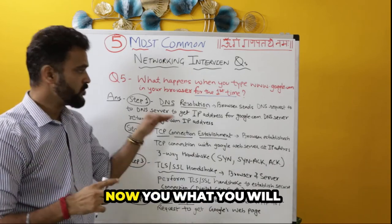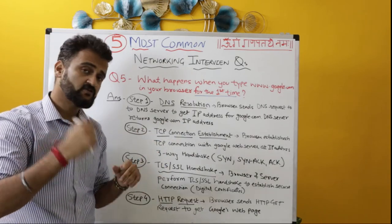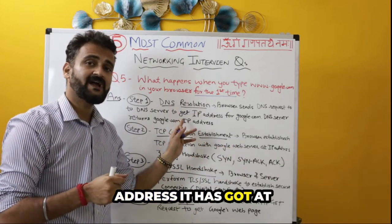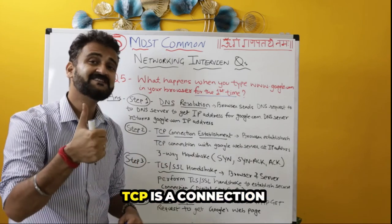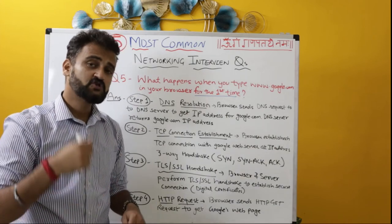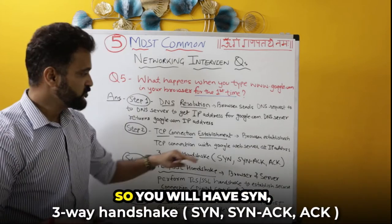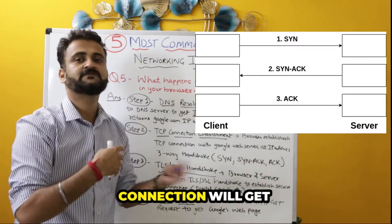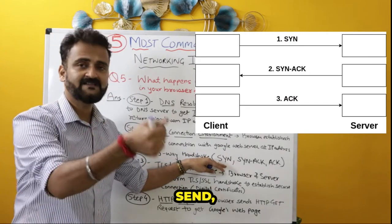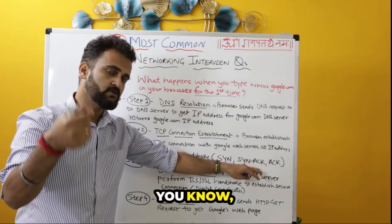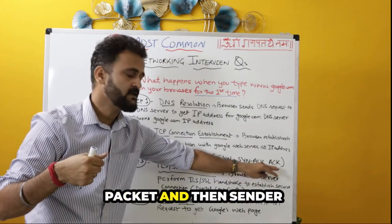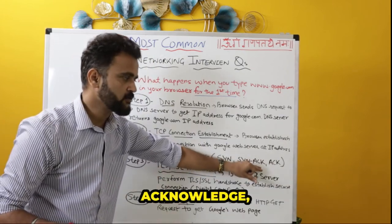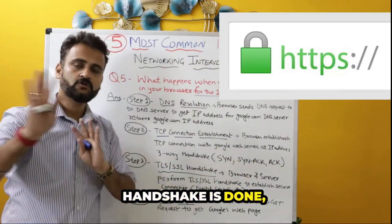The second step is TCP connection. The browser now has the IP address, so it will try to establish a TCP connection with the Google web server at that IP address obtained in step one. TCP is a connection-oriented protocol, so the first thing that happens is a TCP three-way handshake: SYN, SYN-ACK, and ACK. The browser sends the SYN packet, the web server returns the SYN-ACK packet, and then the browser again acknowledges by sending the ACK packet. Once this three-way handshake is done, the TCP connection is established.